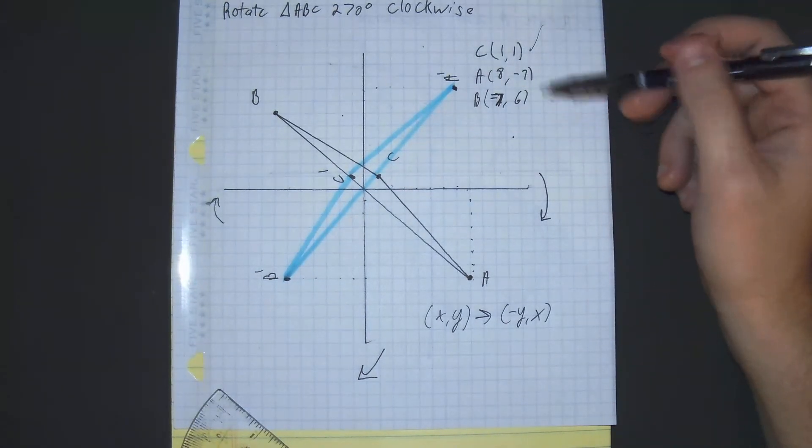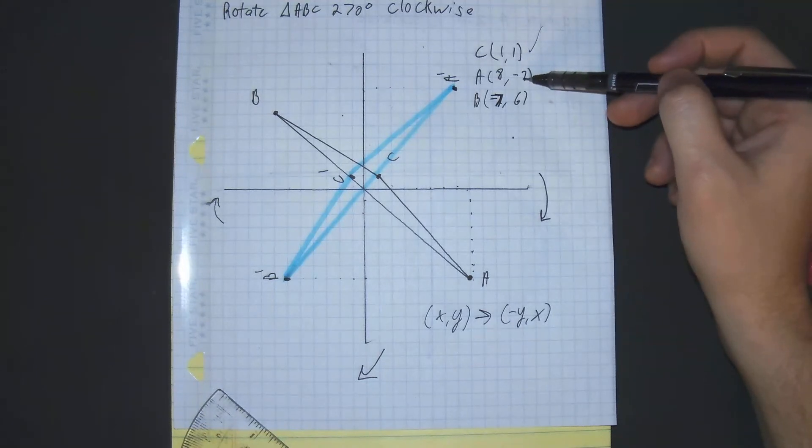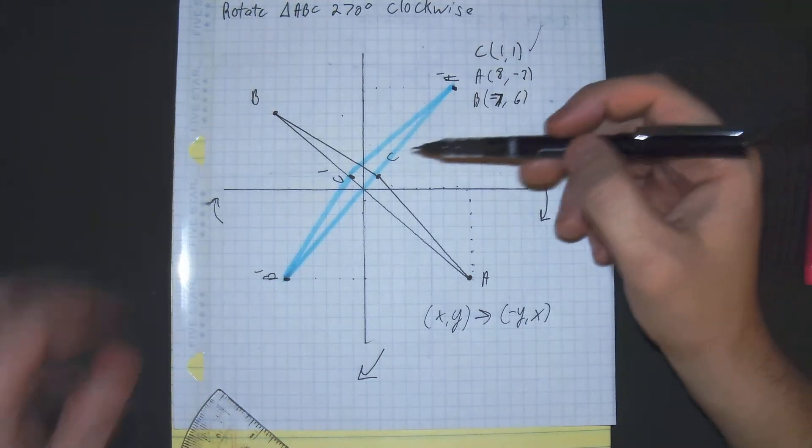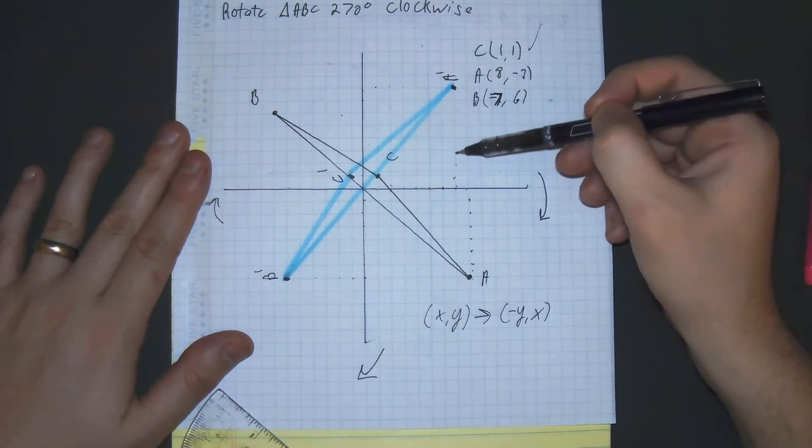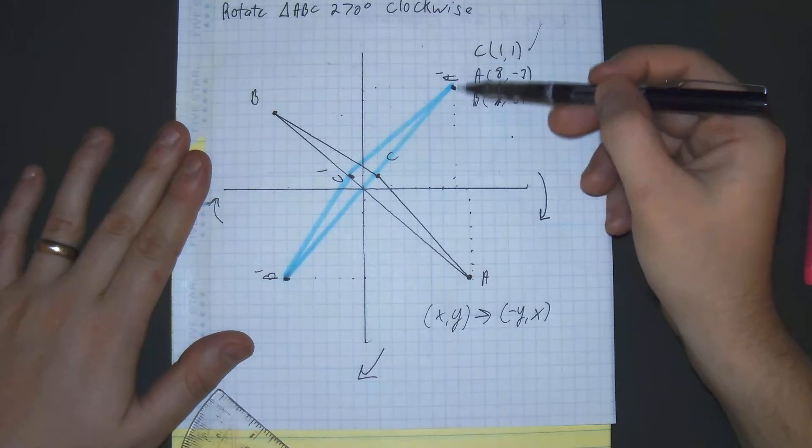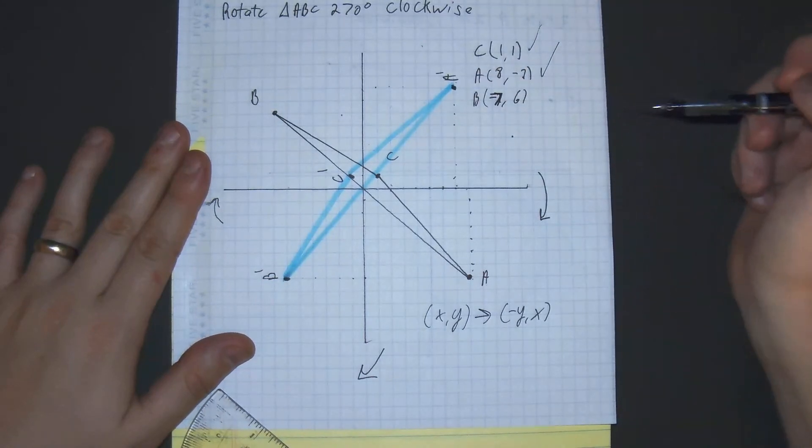Okay, let's check our A prime. So it should become 7 positive, 8 positive. Counting: 1, 2, 3, 4, 5, 6, 7. Good. And 1, 2, 3, 4, 5, 6, 7, 8 positive. That's good. So our A is correct.